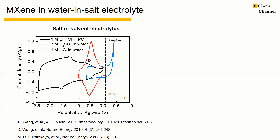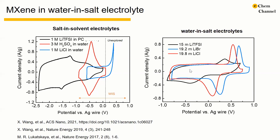Because Ti3C2 will be oxidized at potential more positive than 0.2 V versus silver in the salt solvent electrolyte, the electrochemical behavior of MXene at relatively positive potential has not been explored before. When water-in-salt electrolyte is used, the potential window of Ti3C2 MXene is extended to 0.8 V versus silver. This extension of the stable electrochemical potential window results in a new electrochemical process, as shown by a pair of strong peaks in the anodic and cathodic scan of the CV curve.